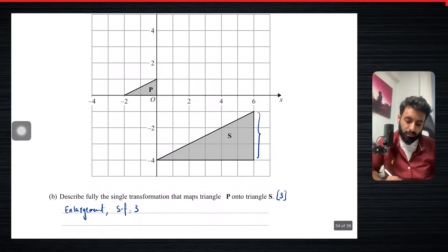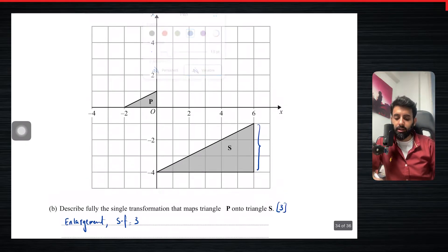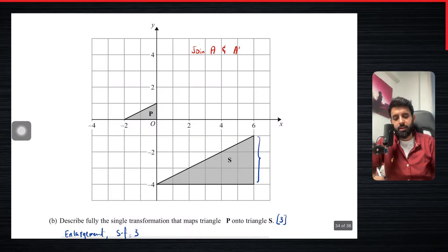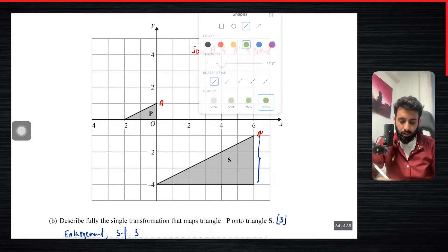Now, how do we find out the center of enlargement? So just remember two things: you join P and P prime. In fact, you know what, let's call it A and A prime, because P has already been used. Now what exactly is A and A prime? A and A prime basically suggests that you take one object and its corresponding image, and not only do you join it, in fact, you join it and extend it.